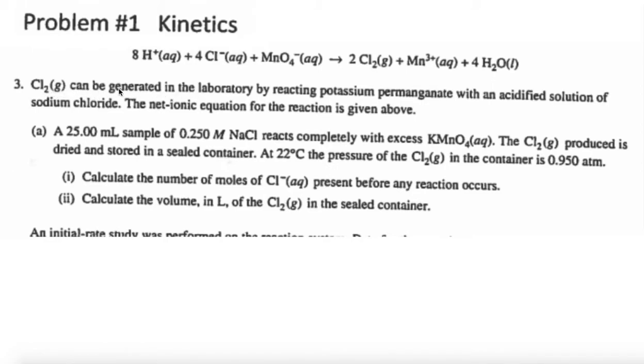Chlorine gas can be generated in lab by reacting potassium permanganate, here's our permanganate ion, with an acidified solution of sodium chloride. So the important ion that's going to be there is the chloride ion with the permanganate. The net ionic equation is given above.